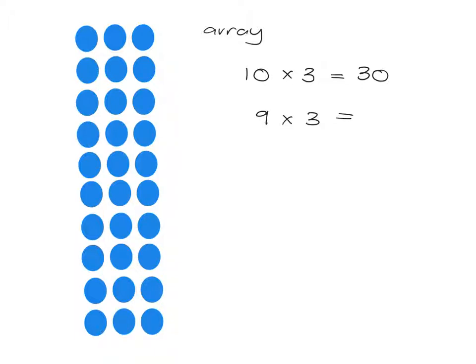...and 9 lots of 3 will just be, all I have to do is take off that last lot of 3. So in other words, it's just going to be 30 minus 3, which is 27.